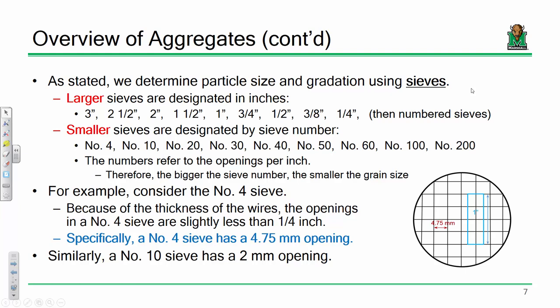Is number four the smallest number you get? Number four is the smallest number, but it's not the smallest opening. The bigger the number, the smaller the opening. A larger number indicates a smaller opening. See this one here? This is a number 100 sieve — there are 100 openings per inch. You can't even really see them; it almost feels like a fabric-type thing. I'm going to pass this one around as well.